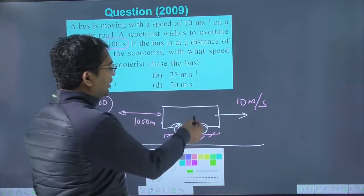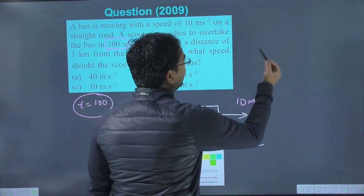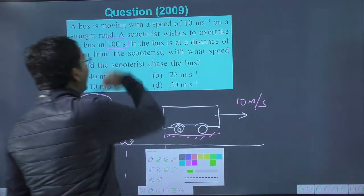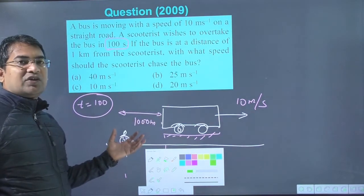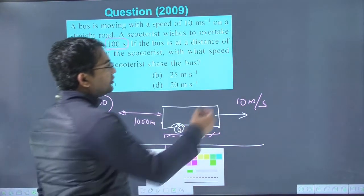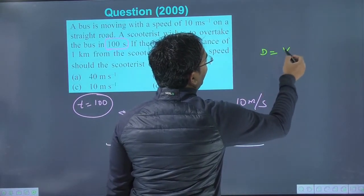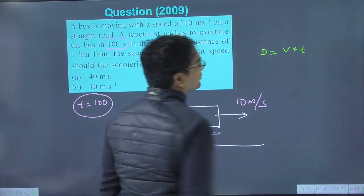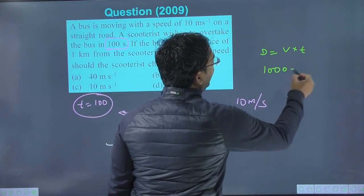If I do this with relative separation, distance equals distance. Because here, the speed is constant, so acceleration is zero. Distance equals speed multiplied by time. The distance is 1000 meters, and the speed is relative speed.